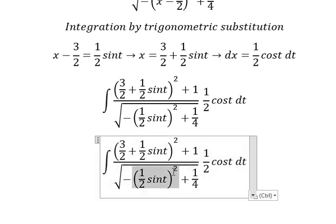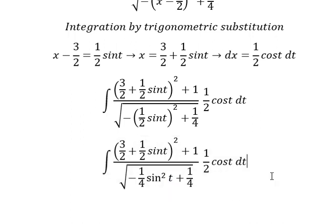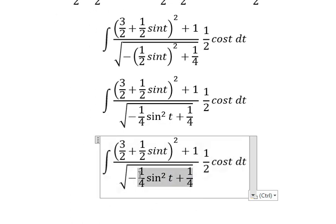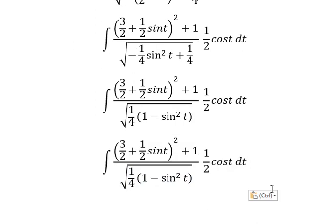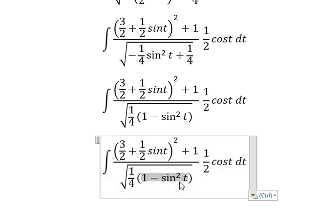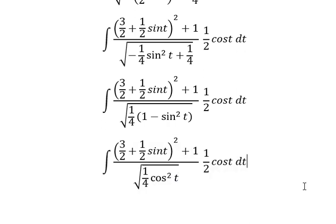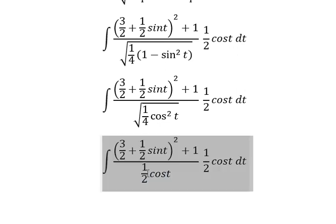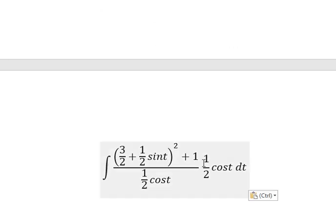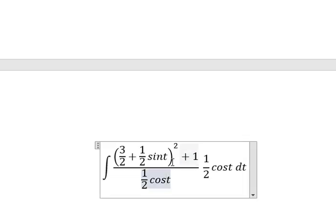So this is about one over four sin T squared. One over four factored out, we can do factorization, and this one gives us cosine T squared.